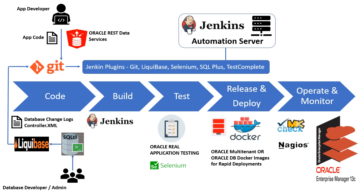Let's move on to the next phase, which is the build phase. In this phase, you would have a Jenkins job which could pull your source code files from your Git repository and initiate a build process to recompile your source code. If your database source code files have some PL/SQL procedures, functions, or packages, you may use the Jenkins SQL Plus plugin or a shell script to connect to your database and recompile those procedures or packages. You don't need any additional tool for database build and can leverage the existing tools and processes used for application build.